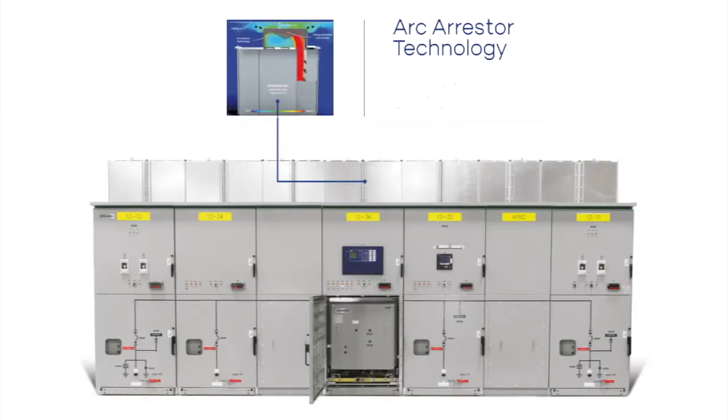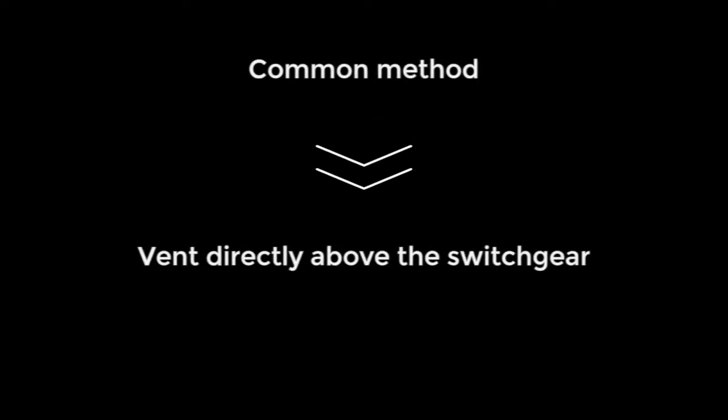Arc-resistant switchgears are designed to withstand the pressure and temperature of gases associated with an internal arcing fault and direct hot gases away from personnel that could be present. The common method is to vent directly above the switchgear.